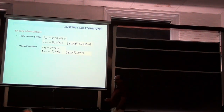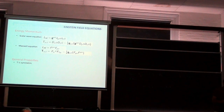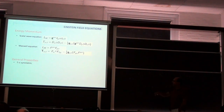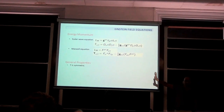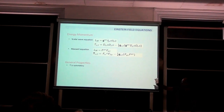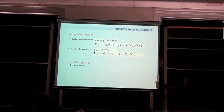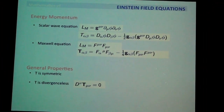This energy-momentum tensor is important because it is tied to conservation laws. Let me write down the main properties, which hold for any matter field — including fluids. These are universal properties. First, T is symmetric, which follows from the definition since G is symmetric and therefore the result is symmetric. This is automatic.